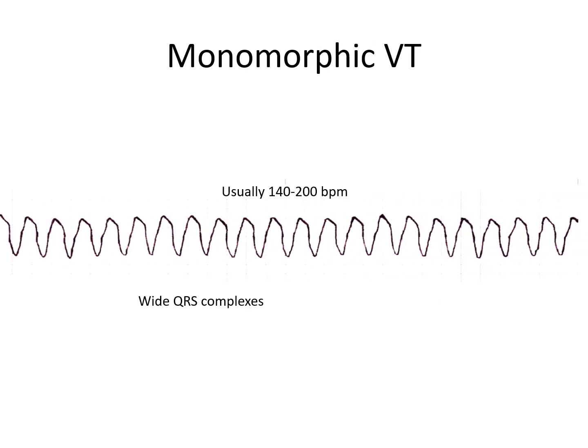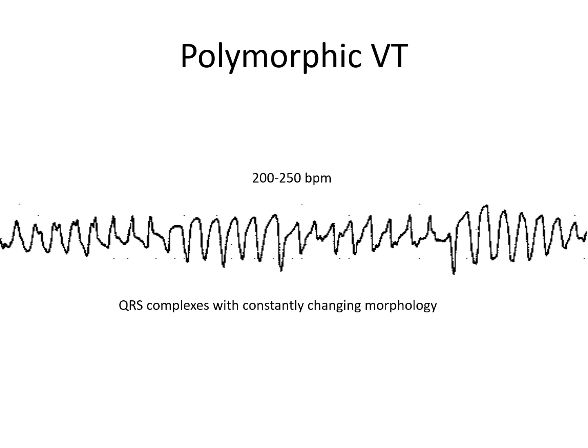Monomorphic ventricular tachycardia: ventricular rate is usually 140 to 200 beats per minute, with wide QRS complexes of uniform morphology. In polymorphic ventricular tachycardia, rate is 200 to 250 beats per minute, with QRS complexes of constantly changing morphology.